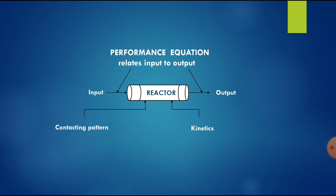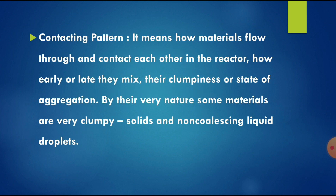The contacting pattern and kinetics are key factors for reactor design. Contacting pattern means how materials flow through and contact each other in the reactor — how early or late they mix, or their clumpiness or state of aggregation. By their very nature, some materials are very clumpy, such as solids and non-coalescing liquid droplets. How the reactants flow, contact, mix, and their state of aggregation is called the contacting pattern.